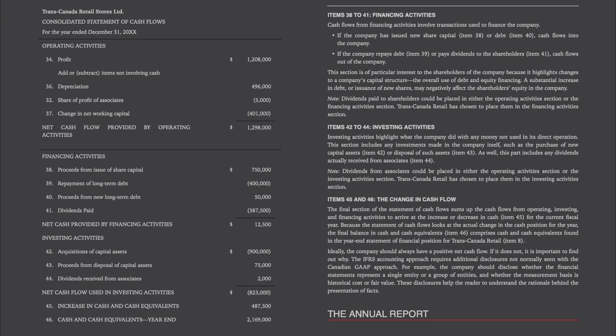If the company has issued new share capital (item 38) or debt (item 40), cash flows into the company. If the company repays debt (item 39) or pays dividends to the shareholders (item 41), cash flows out of the company. This section is of particular interest to shareholders because it highlights changes to a company's capital structure — the overall use of debt and equity financing. A substantial increase in debt or issuance of new shares may negatively affect the shareholders' equity in the company. Note that the dividends paid to shareholders could be placed in either the operating activities section or the financing activities section; TransCanada Retail has chosen to place them in the financing activities section.